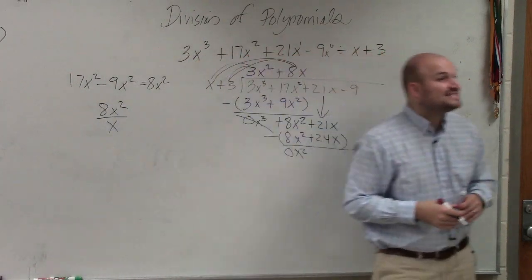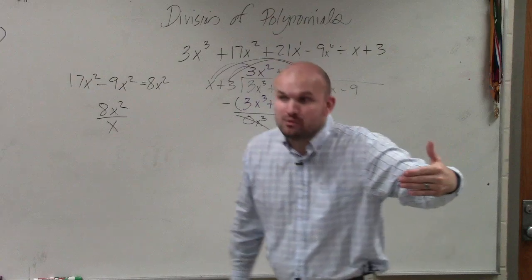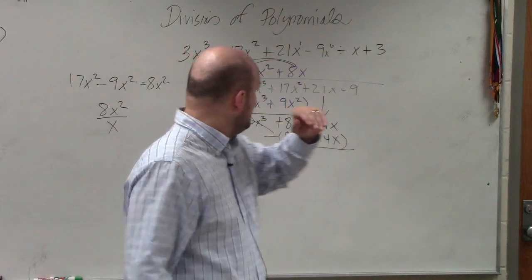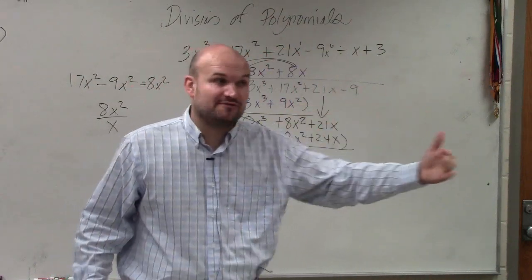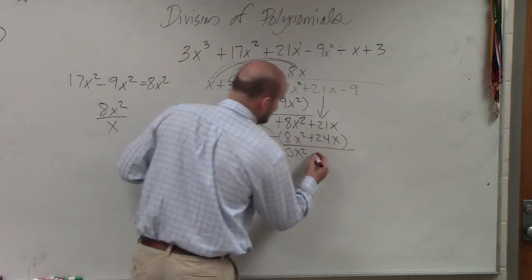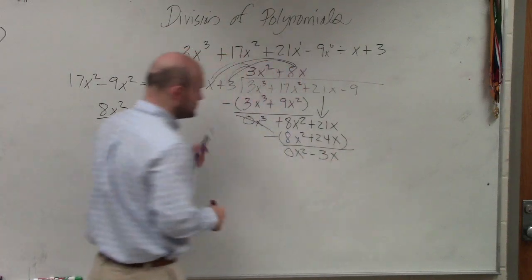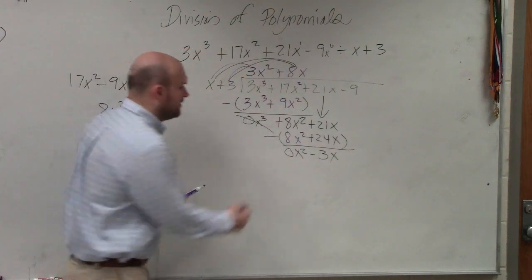So 8x squared minus 8x squared is 0x squared. 21 minus 24, you have $21 and you owe me $24, right? So now you owe me $3. That goes to 0.